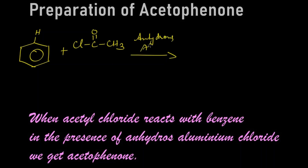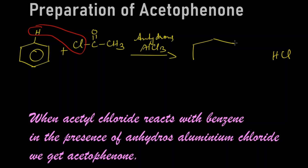In the presence of anhydrous aluminium chloride, this hydrogen and this chlorine get eliminated as hydrogen chloride (HCl). The remaining CH3CO group gets attached to the carbon in the benzene ring.